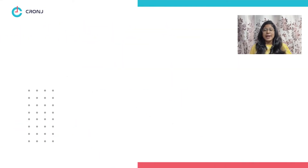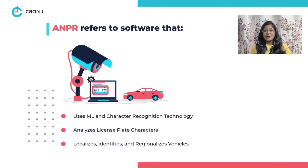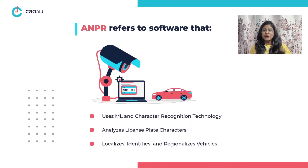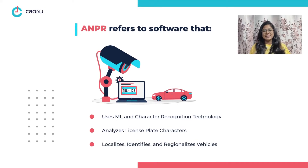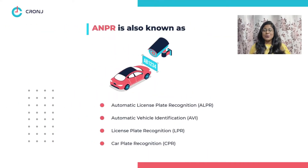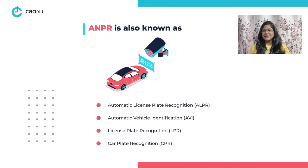Firstly, what is Automatic Number Plate Recognition? ANPR, or Automatic Number Plate Recognition, refers to the software which uses character recognition technology and machine learning algorithms to localize, segment, identify, and regionalize vehicles simply by reading their license plates.